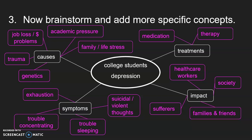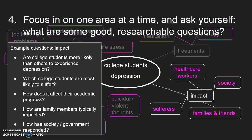You're going to do that for each of your subtopics. Step four: look at each branch or subtopic one at a time and brainstorm some questions — questions that are specific, things you don't already know, but things you could find out with a little research. For example, looking at the impact branch, here are some questions I came up with: Are college students more likely than others to experience depression? Which college students are most likely to suffer? How does it affect their academic progress? How are their family members typically impacted? And how have society or our government — local or national — responded to this issue? You're going to do this for each of the branches or subtopics you've come up with.